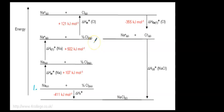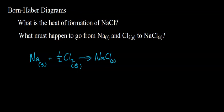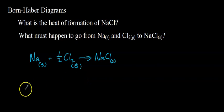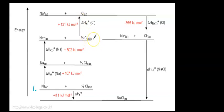Now let's look at the chlorine. For the heat of formation, that's the energy absorbed or released when one mole of a compound forms from its elements, so we have half a mole of chlorine molecules. Our ultimate goal is to get chloride ions, so first we need to separate the two chlorine atoms from each other. This is also ΔH atomization — also called bond energy — the energy required to break covalent bonds. That requires 121 kilojoules per mole.